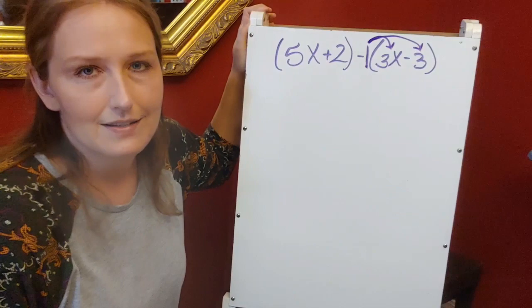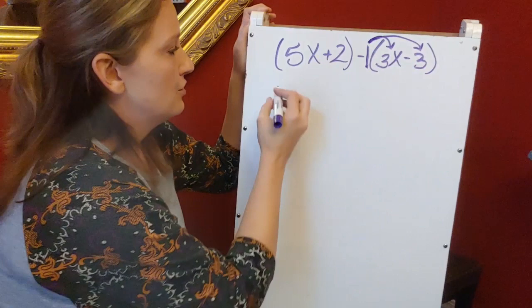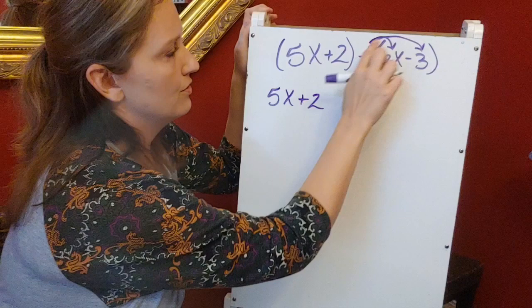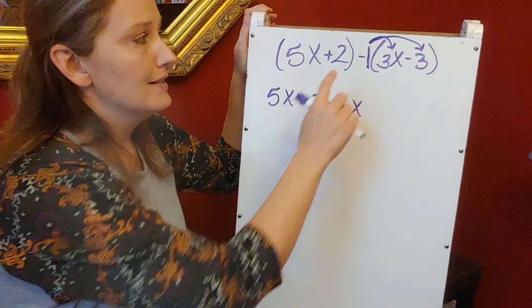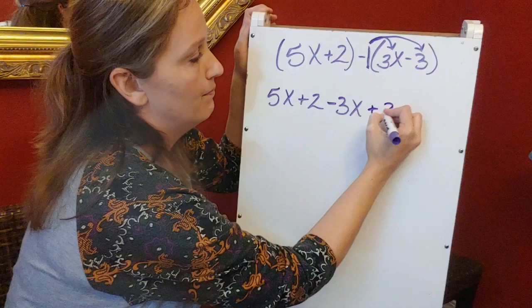So I'm going to rewrite this with that distribution. I'm going to leave the first one the same. I'm going to distribute that negative 1. Negative 1 times 3x is a minus 3x. Negative 1 times a negative 3. Now be careful when you're multiplying, pay attention to your signs. This is a negative 1 times a negative 3, so my answer to that is a positive 3.